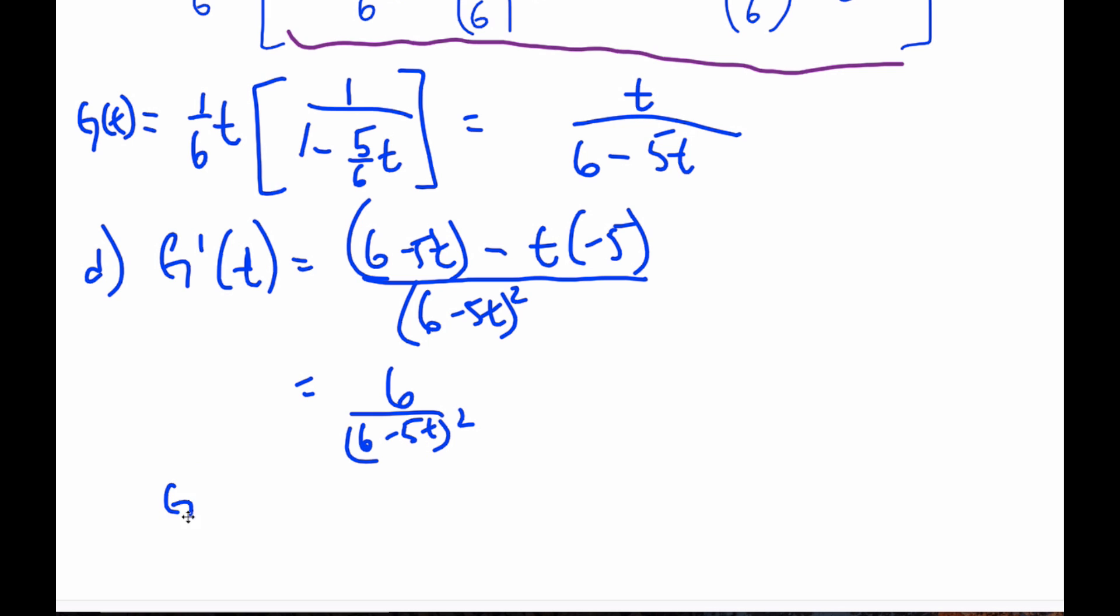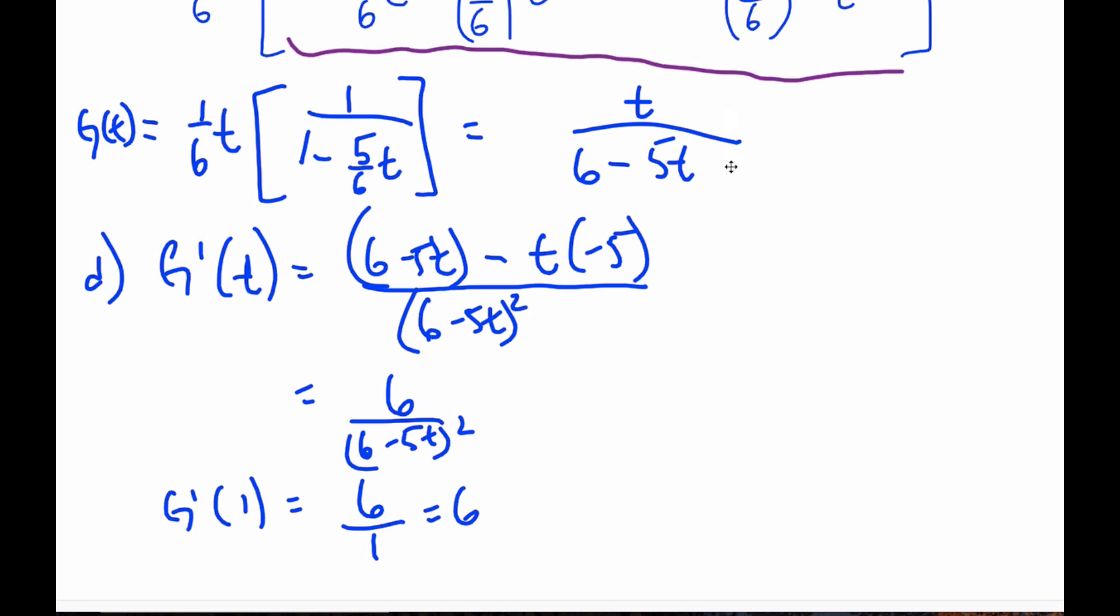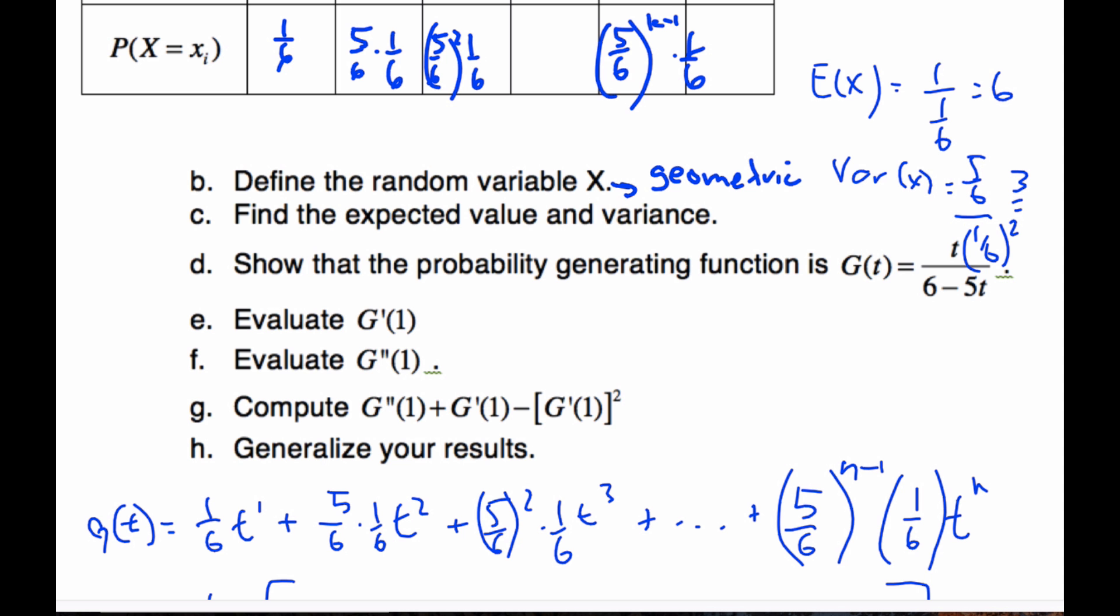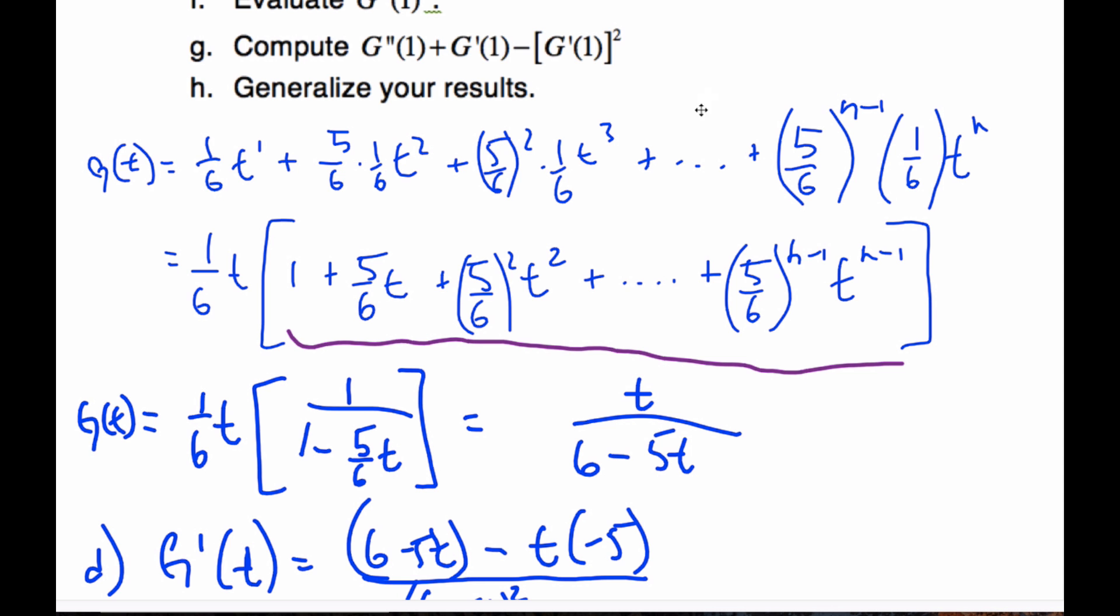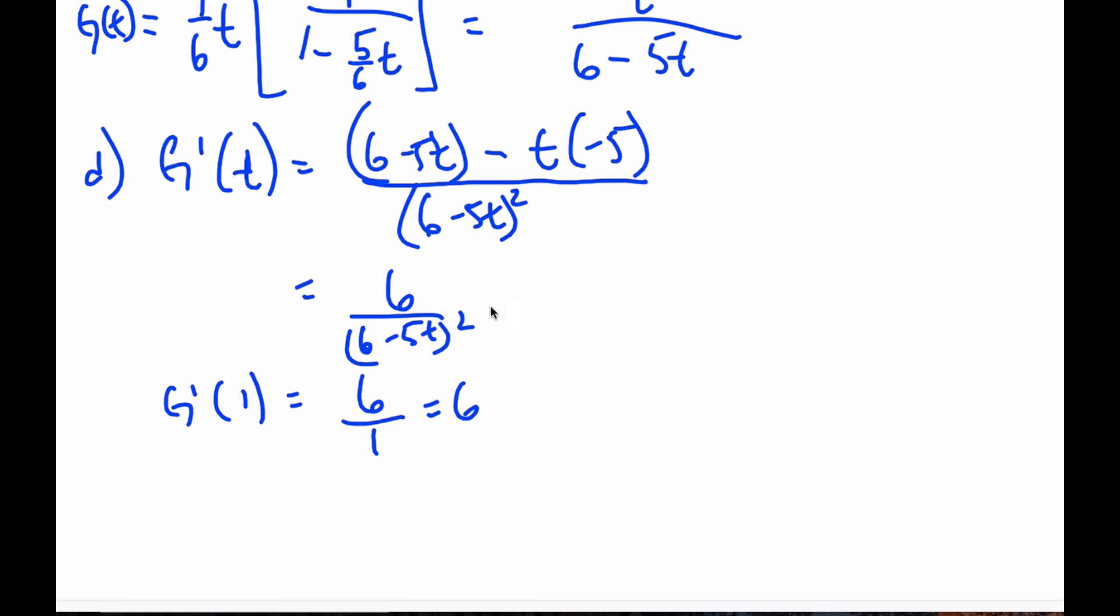Now I want to find G prime at one. So if I do that, this ends up being six minus one, which is six. Now the thing I want to bring your attention to is we found the expected value was six. And so what we can say is G prime at one, this here for any probability generating function is the expected value. Now that's not a proof per se, but it's a rationalization of it with the geometric.